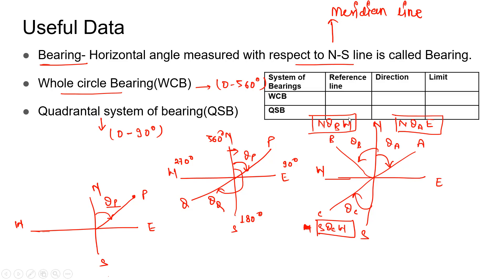Comparing both systems: in WCB the reference line is always north, while in QSB the reference line may be north or south. The direction in whole circle bearing is always clockwise, whereas in QSB it can be clockwise or anticlockwise. In WCB the limits are 0 to 360 degrees, and in QSB the limit is 0 to 90 degrees.